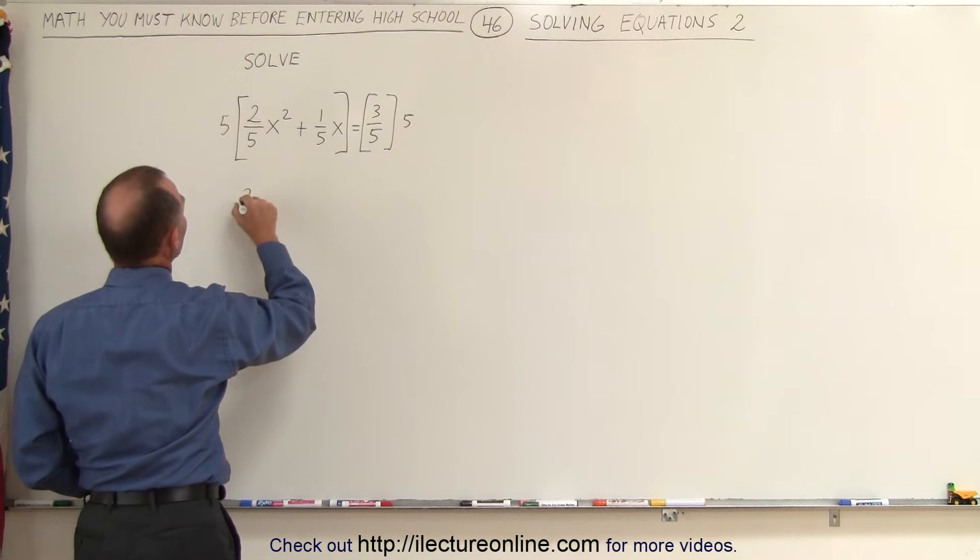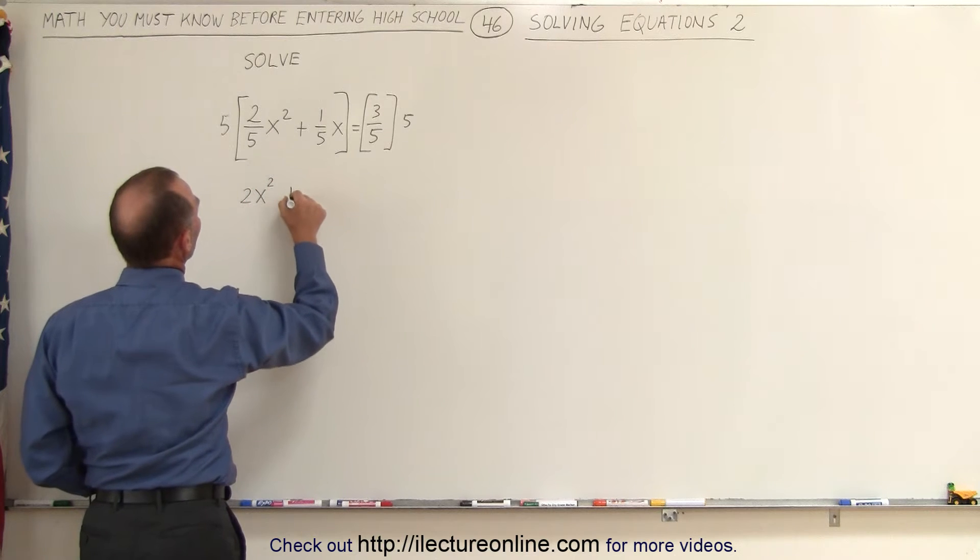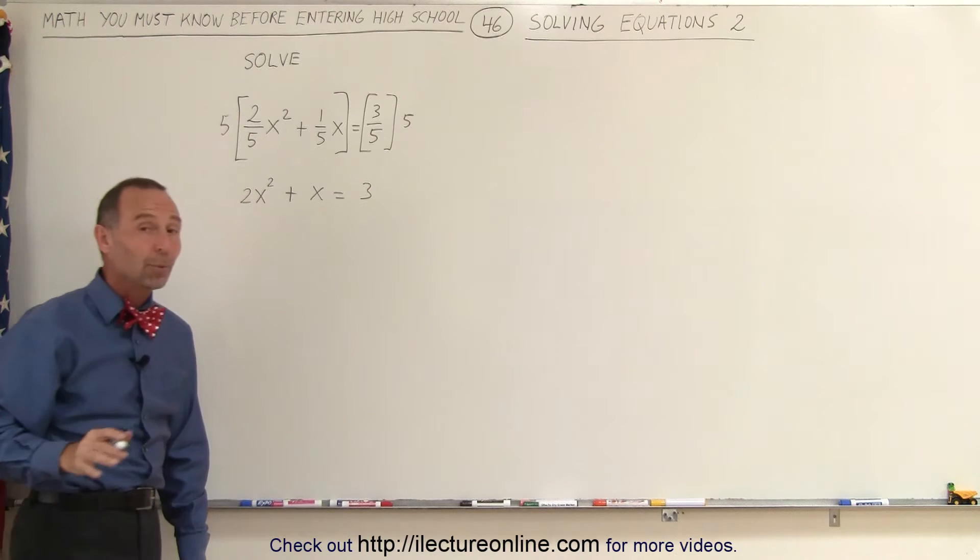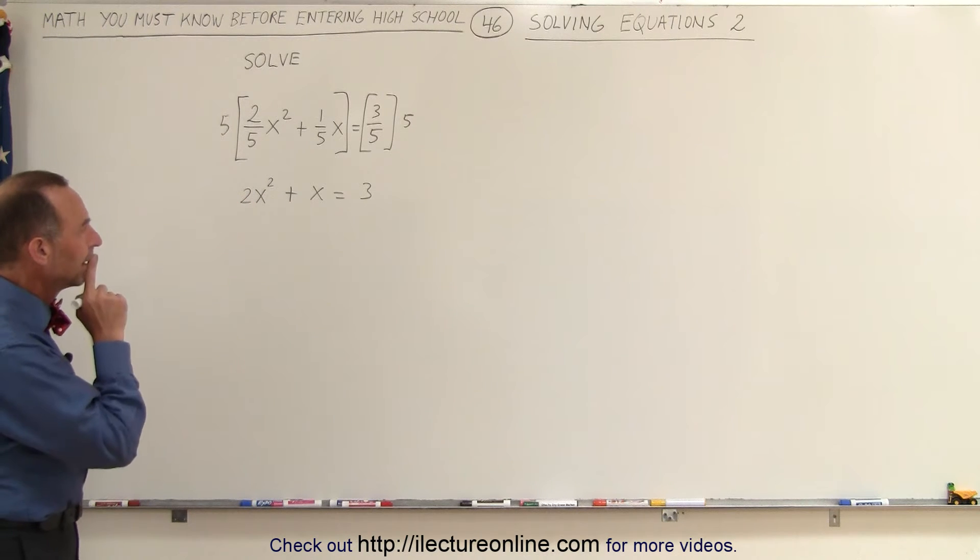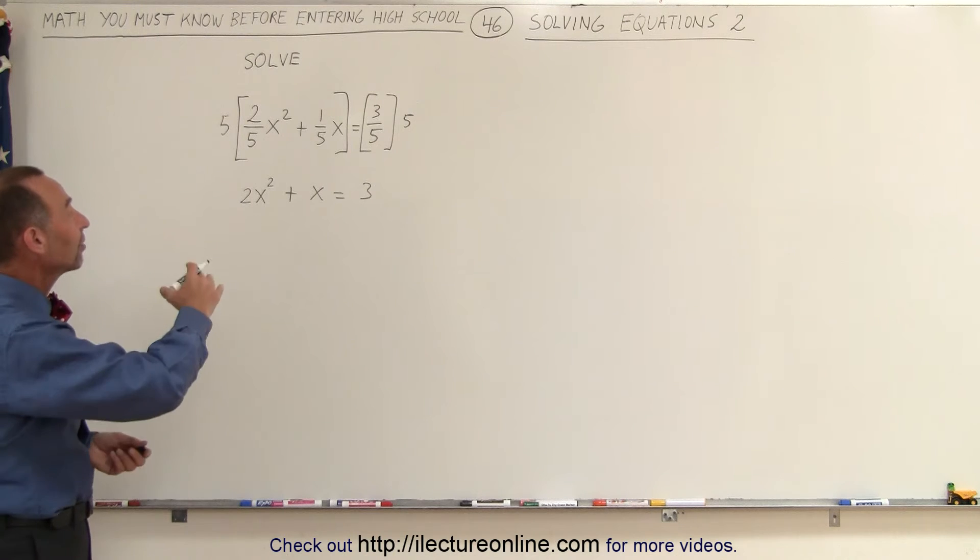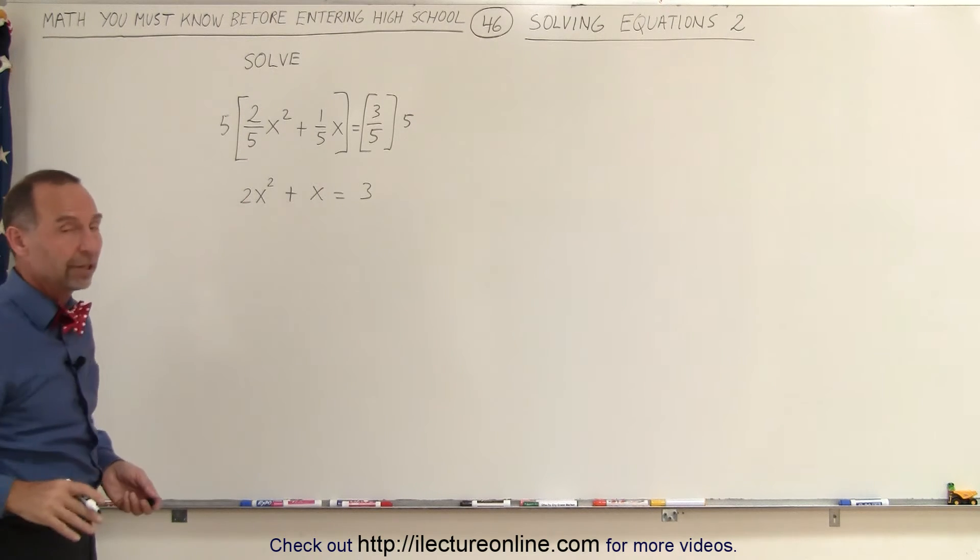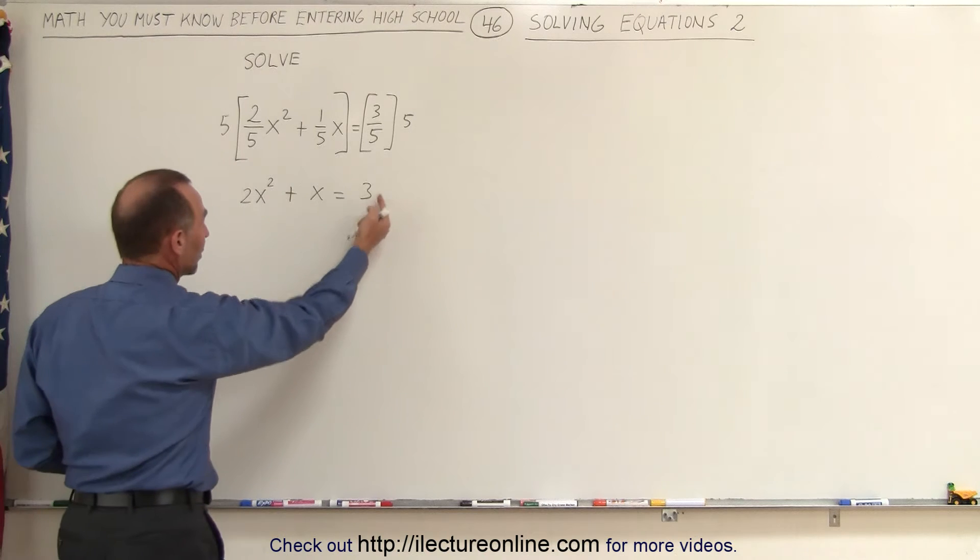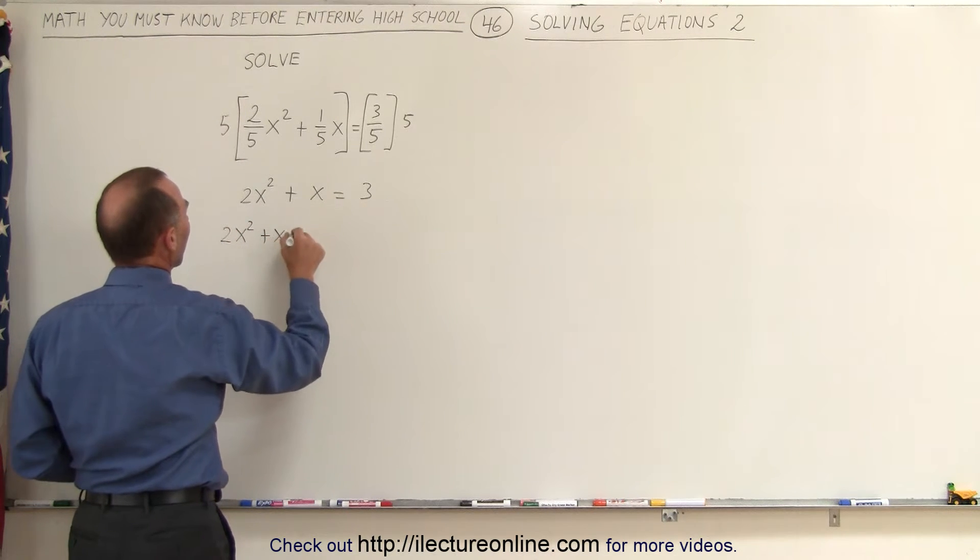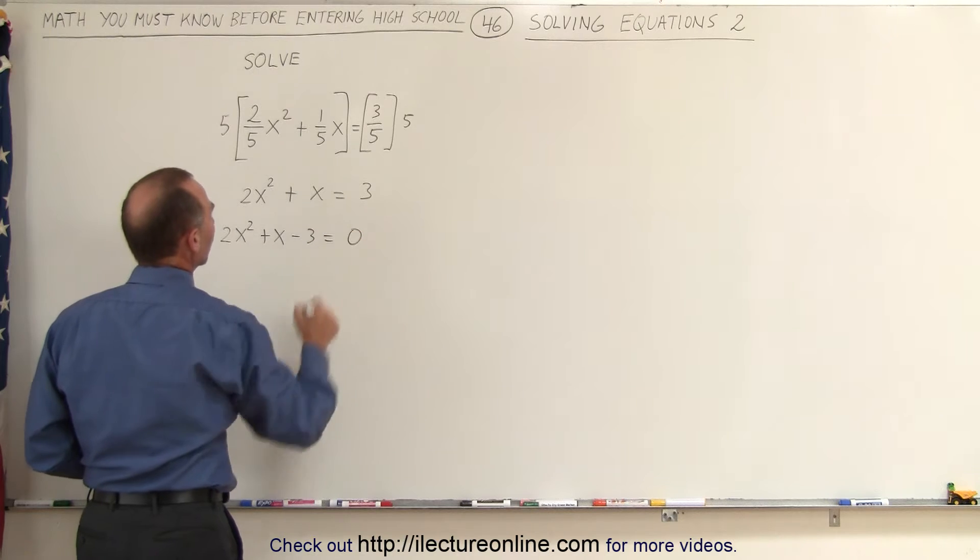The 5 cancels out. We have 2x squared plus x equals 3. Now, that looks a little bit more like a quadratic equation. The next thing we should do, since it's a quadratic equation, is move everything to one side and set it equal to 0 on the other side. So we move the 3 over, and we get 2x squared plus x minus 3 equals 0.